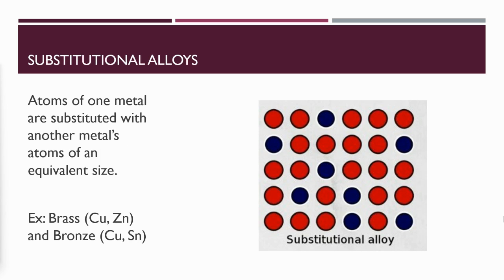In a substitutional alloy, an atom of one metal is substituted with atoms of another metal that are a similar size. Examples of this are brass and bronze. In brass, copper and zinc atoms are mixed together and the zinc replaces some of the copper atoms in the crystal structure. This gives the unique properties that brass has. It doesn't look like copper or zinc. It has unique properties all on its own by substituting the zinc into the copper matrix. Bronze is another example of a substitutional alloy where tin atoms are substituted in for the copper atoms. That substitution gives unique properties to bronze that copper and tin do not have individually.